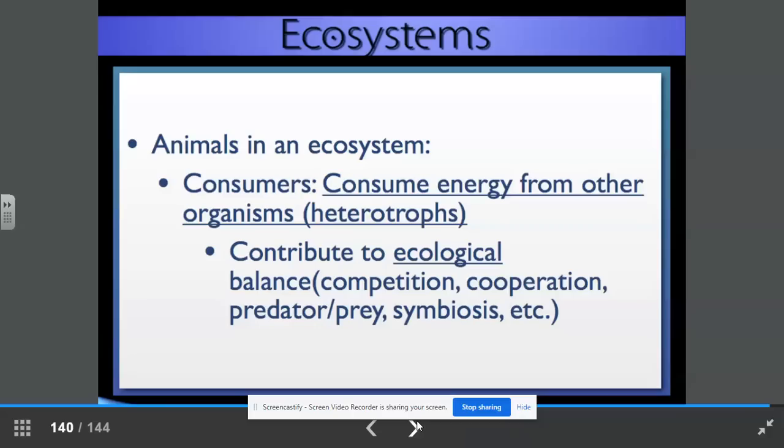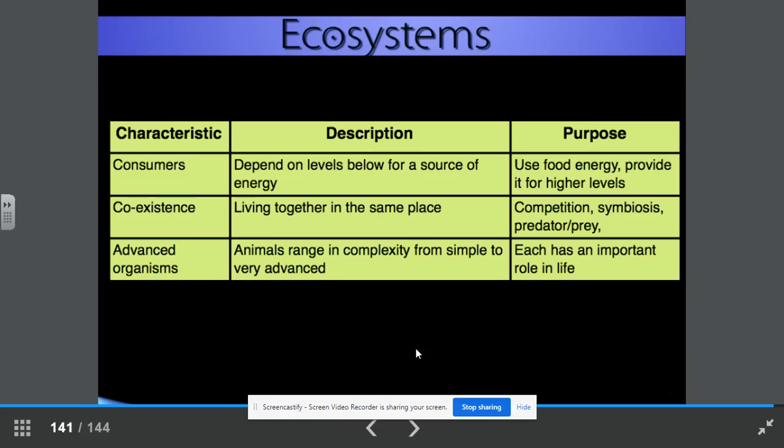Animals in an ecosystem. For example, we have consumers. They consume energy from other organisms. They can be heterotrophs. They contribute to ecological balance, such as competition, cooperation, predator-prey relationships, symbiosis, and many others. So let's look at consumers. They depend on levels below for a source of energy. They use food energy and provide it for higher levels. The coexistence that they exhibit is living together in the same space. The competition, symbiosis, predator-prey relationship is all evident.